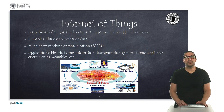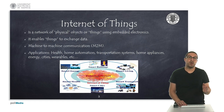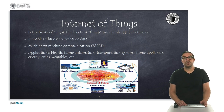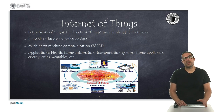But for now, it is important for you to know that the type of applications we can deploy with IoT devices include home automation, intelligent transportation systems, home appliances, energy buildings, wearables, and more.